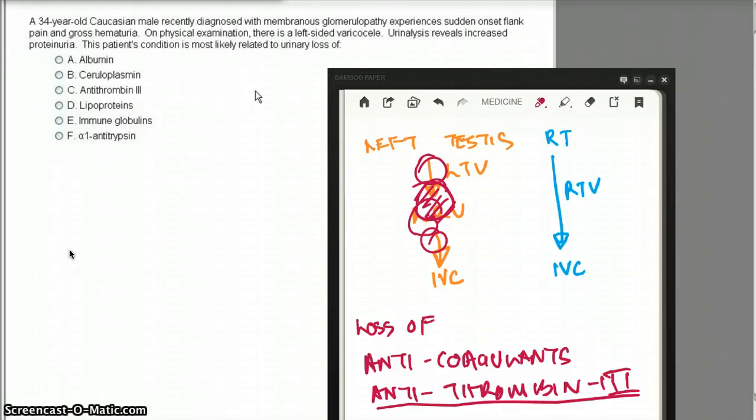Let's talk about choice D, lipoproteins. Lipiduria is common in nephrotic syndrome. This is caused by increased synthesis of lipoproteins by the liver and increased glomerular capillary wall permeability to larger molecules, which leads to lipid loss in the urine in the form of free fat. That is again not related to this hypercoagulable state and MGN.